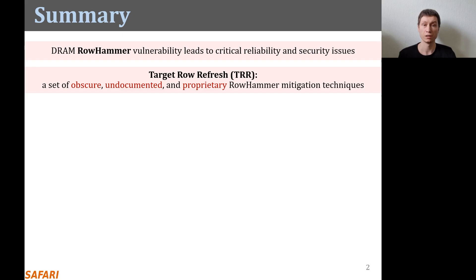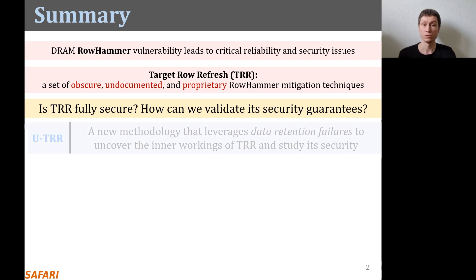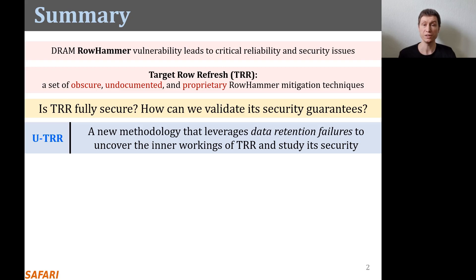Due to their proprietary nature, the security guarantees of these RowHammer mitigation techniques cannot be easily studied. In this work, our main goal is to answer the following questions: Is TRR fully secure? How can we validate the security guarantees of different TRR mechanisms? To this end, we propose UTRR, a new methodology that leverages data retention failures in DRAM to uncover the inner workings of TRR and study its security.